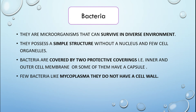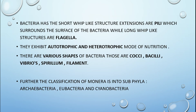Bacteria have two protective coverings — an inner cell membrane and a surrounding capsule. A few bacteria, like mycoplasma, do not have a cell wall. Bacteria also have short web-like structural extensions called pili surrounding the surface, and long whip-like structures called flagella helping them move. They exhibit autotrophic and heterotrophic modes of nutrition. The various shapes of bacteria are cocci, bacillus, vibrio, spirillum, and filament.